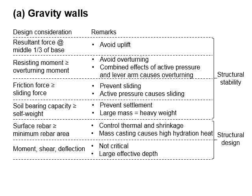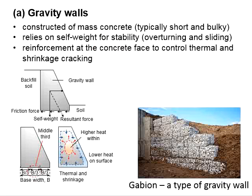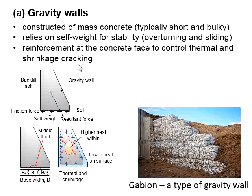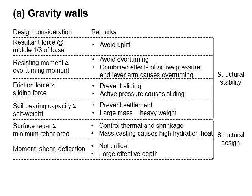This table summarizes the typical design considerations of a gravity wall. First, ensure that the resultant forces are within the middle one-third of the base, to avoid uplifting. Due to the horizontal force caused by active pressure and the vertical force caused by the self-weight of the gravity wall, there will be a resultant force. This resultant force must fall within the middle one-third to prevent the retaining wall from being uplifted, which is essential to ensure stability.